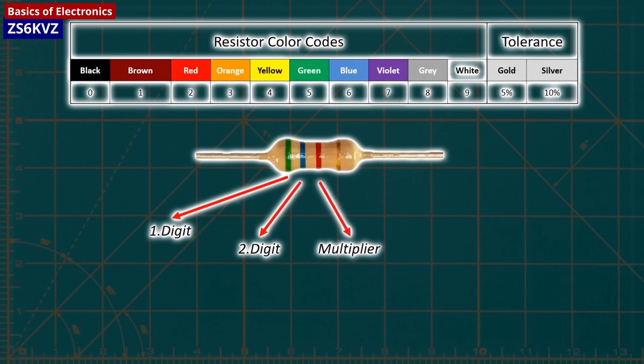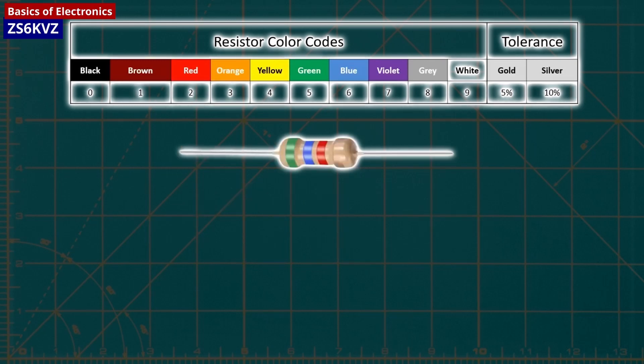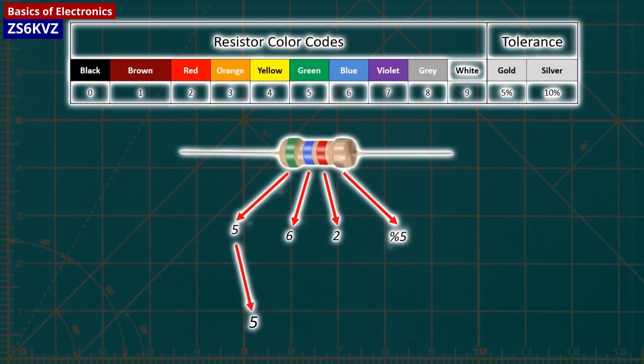You read the values from left to right towards the gold band. The first two colors represent the resistor value, the third represents the multiplier, and the fourth represents the tolerance or precision of the component. You can tell the value of each color by looking at a resistor color value chart.